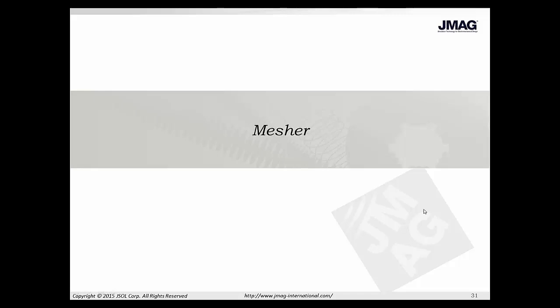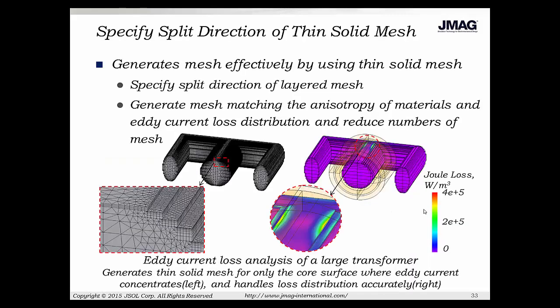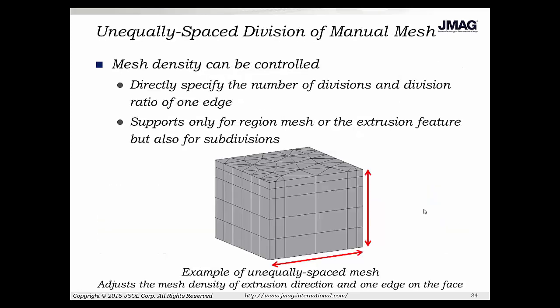Getting into the mesher improvements: in the mesher, we can now specify a split direction in the thin solid mesh. This is an example of a transformer where the surface has a different material property than the core. The thin solid mesh will provide better accuracy when there are thin parts contacting much larger parts. In the manual mesh, you can specify the size of elements in a direction, giving you the option to create unequal spacing.